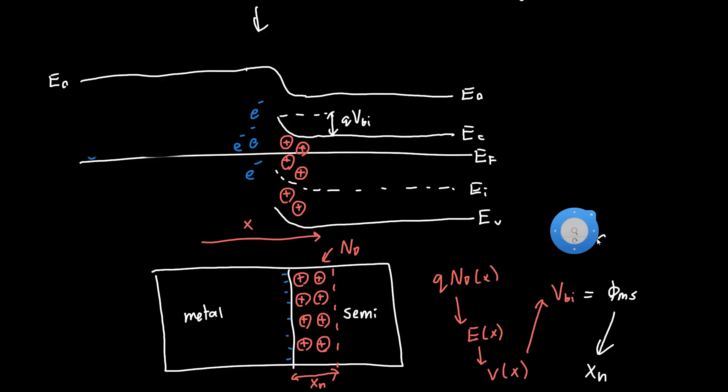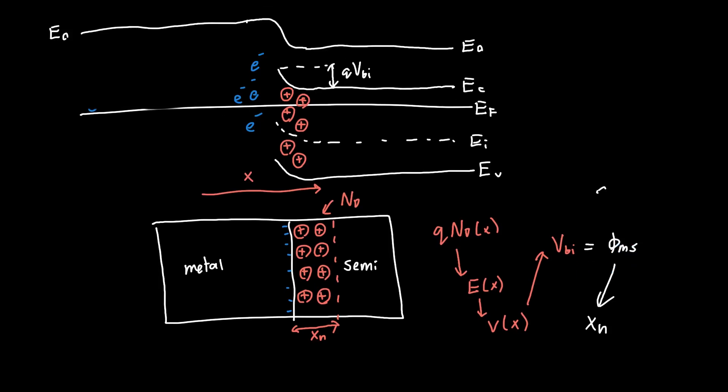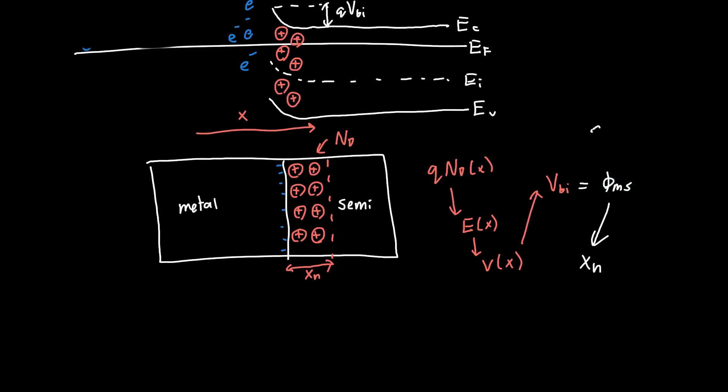The end result that you'll get, if you want more on how to actually do this procedure, you start with Gauss's law, then use the definition of electric field and voltage. After doing some integrals, you'll figure out that the depletion region width is the square root of 2 times the permittivity of silicon times the built-in potential divided by Q times the doping. That's this quantity here, Xn, the depletion region thickness.